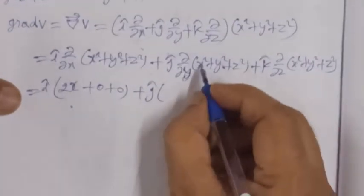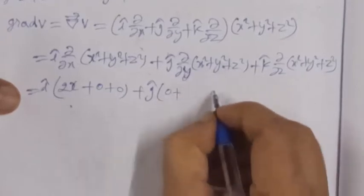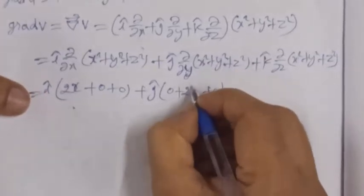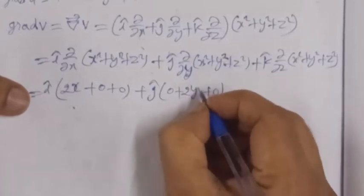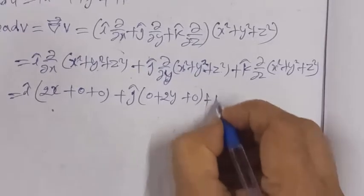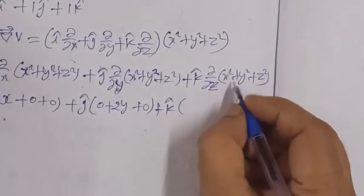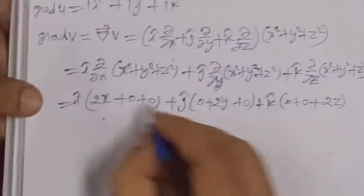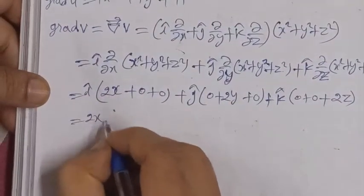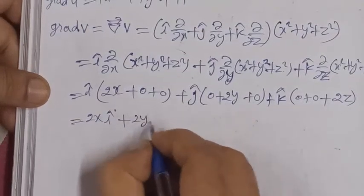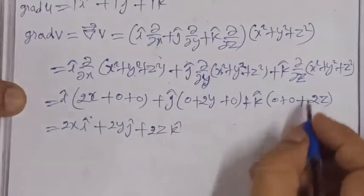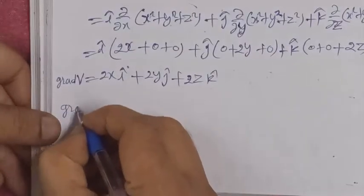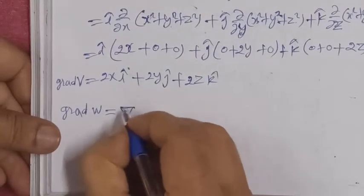For the j-cap term, we differentiate with respect to y: x² and z² are constant, giving zero; y² differentiates to 2y. For the k-cap term, differentiating with respect to z: x² and y² are constant, giving zero; z² differentiates to 2z. Therefore, grad v equals 2x·i-cap plus 2y·j-cap plus 2z·k-cap.